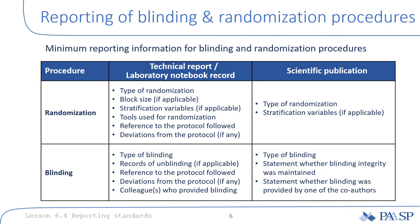Reporting guidelines typically indicate not only what needs to be mentioned — for example, random assignment of subjects to treatment conditions — but also suggest which details are important to disclose and provide examples of good reporting practices. When you apply randomization, it is essential to reveal in a publication what type of randomization procedure was used. When blinding was applied, it is essential to indicate what kind of blinding was applied, which steps of the experimental procedures were performed blind to treatment conditions, and whether blinding integrity was maintained over the course of the experiment.